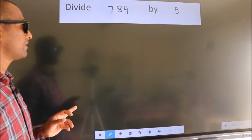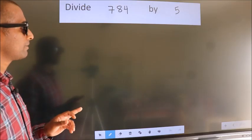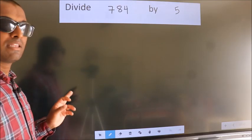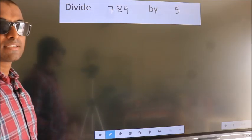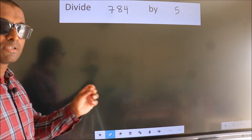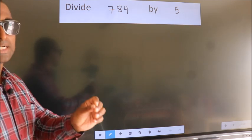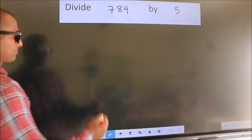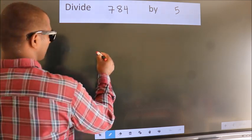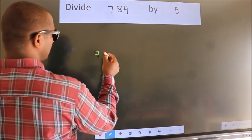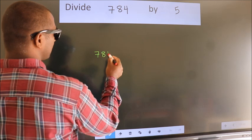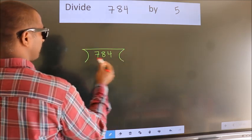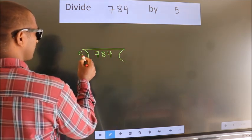Divide 784 by 5. To do this division, we should frame it in this way: 784 here, 5 here.